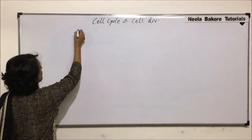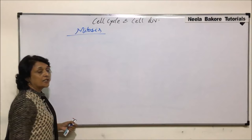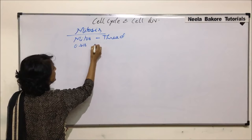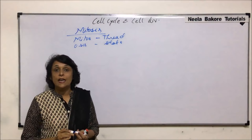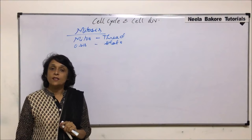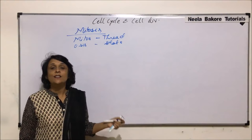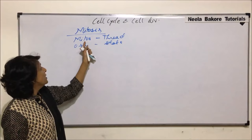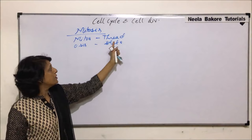Let us now talk about the next division, that is mitosis. First, understand the meaning of the word. Mitos means thread and osis means state. So mitosis is a division in which threads — actually spindle fibers — are formed. If you recall amitosis, where the nucleus divides by constriction, no spindle fiber formation takes place. Mitosis, by contrast, is a division where actual spindle fiber formation takes place.